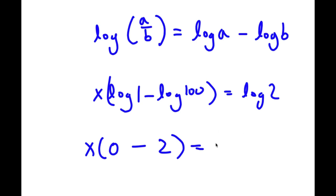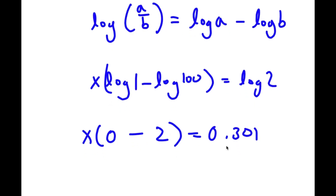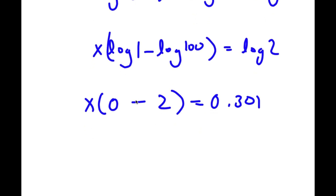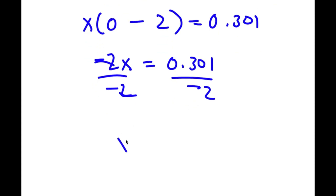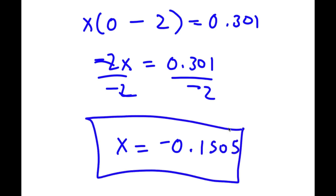Log 2 is approximately 0.301. And 0 minus 2 is negative 2, so I have negative 2 times x is equal to 0.301. Dividing both sides by negative 2, these cancel out and I'm left with x is equal to 0.301 over negative 2, which equals negative 0.1505. So this is my answer.